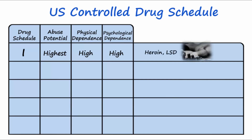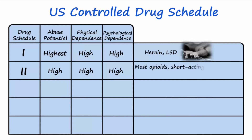Schedule 2 drugs have a high potential for abuse but have a clinical use. They are highly controlled and require a doctor to reassess need and re-prescribe every time, so no automatic refills. Examples include most opioids, short-acting barbiturates, amphetamines, and methylphenidate.